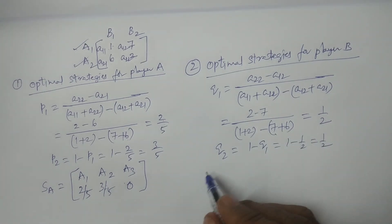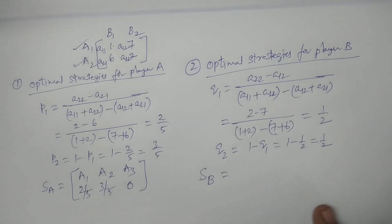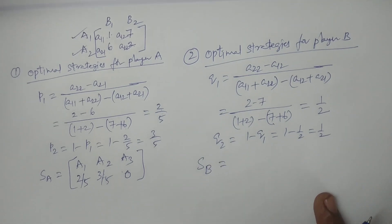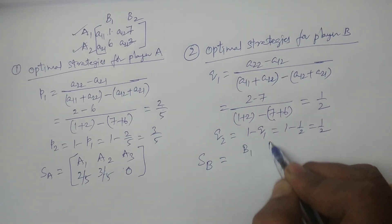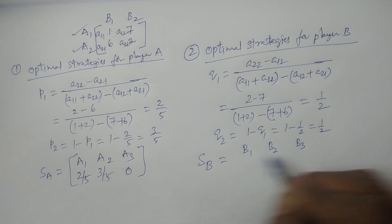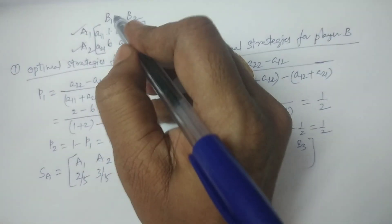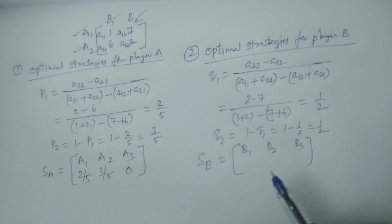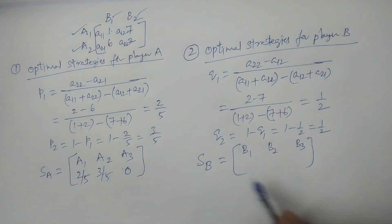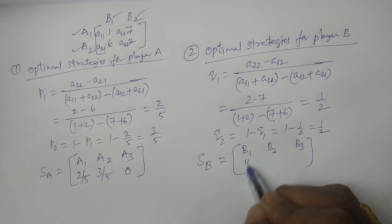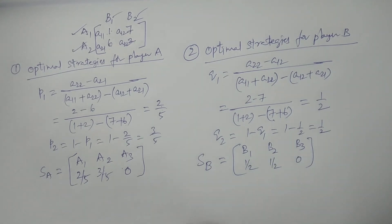Therefore, the optimal strategies for player B: the original problem has three strategies B1, B2, B3. From the reduction, B1 and B2 remain for player B. So the probabilities are: B1 has probability Q1 = 1 by 2, B2 has probability Q2 = 1 by 2, and B3 has probability 0. These are the optimal strategies for player B.